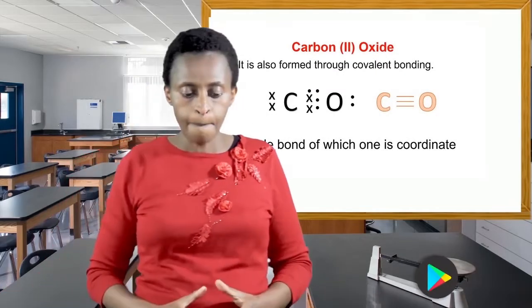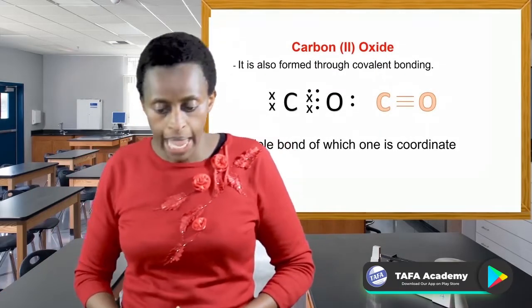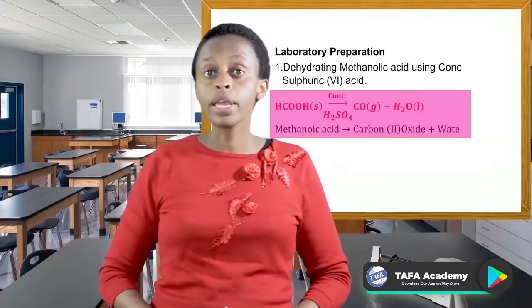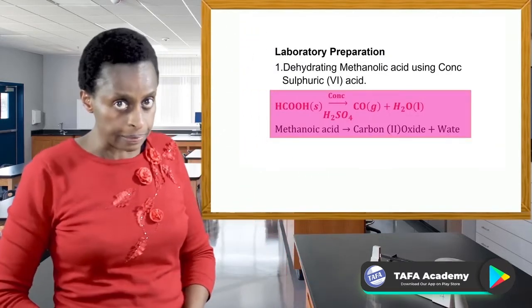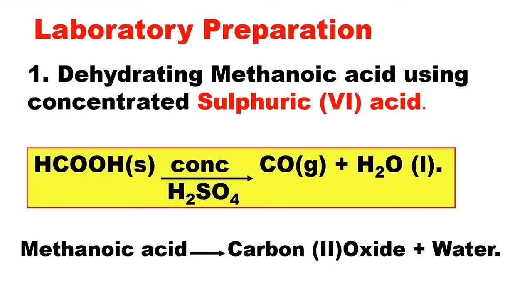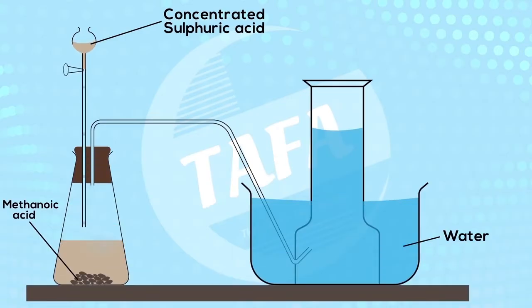Let us see how the gas is prepared in the laboratory. There are three ways it can be prepared. The first method is dehydrating methanoic acid using concentrated sulfuric acid. You run concentrated sulfuric acid into methanoic acid and the gas is generated: carbon monoxide (CO) and water as products. The gas is collected over water.